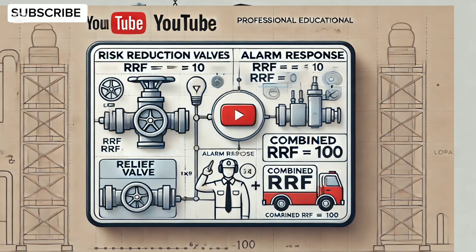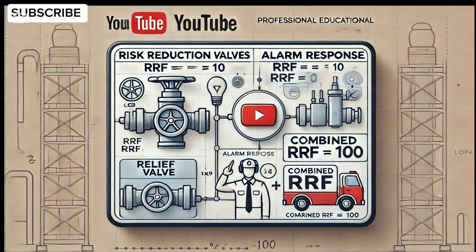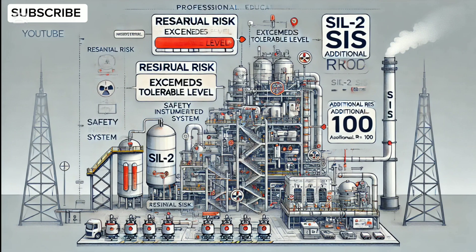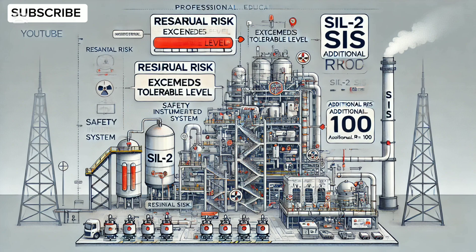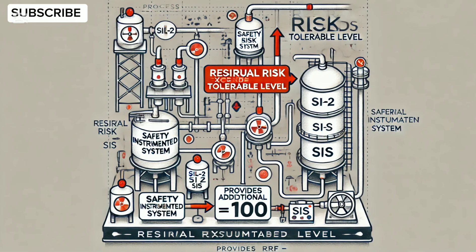The relief valve has a risk reduction factor (RRF) of 10, alarm response has an RRF of 10, giving a combined RRF of 100. The residual risk, however, still exceeds the tolerable level. Therefore, a SIL-2 safety instrumented system (SIS) is recommended, providing an additional RRF of 100 to meet safety standards.